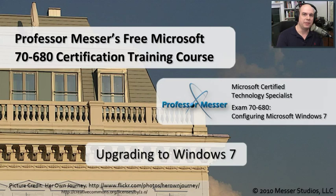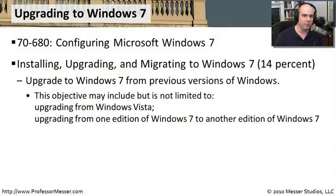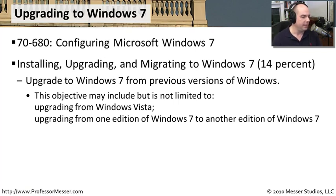Welcome to this module of Professor Messer's free Microsoft 7680 certification training course. I'm James Messer. In this module, we're going to talk about upgrading to Windows 7. Windows 7 upgrades are covered in our requirements that discuss installing, upgrading, and migrating to Windows 7, including upgrading from Windows Vista and upgrading from one edition of Windows 7 to another edition of Windows 7.